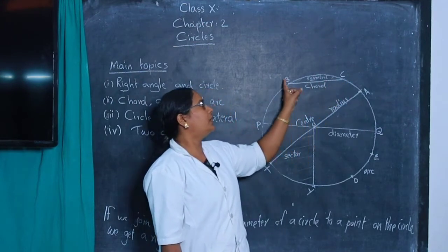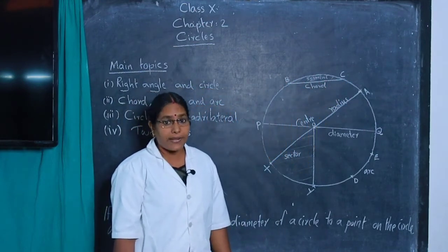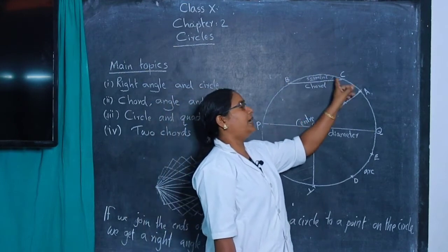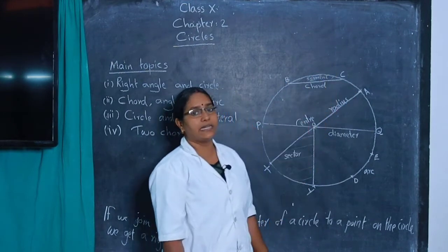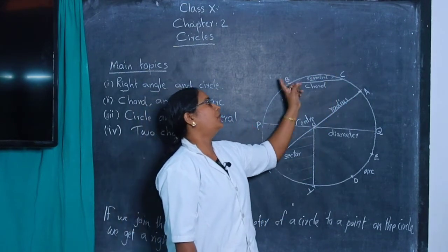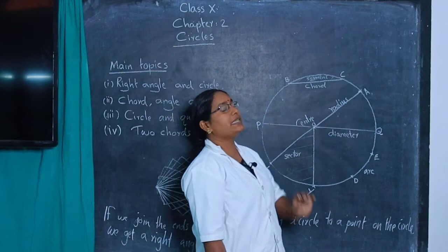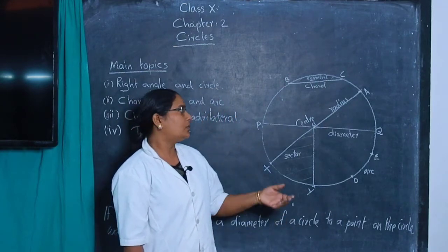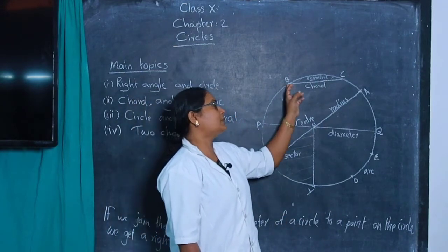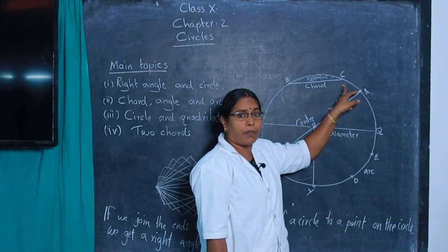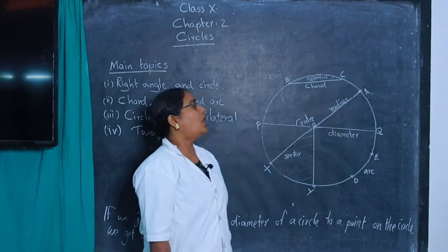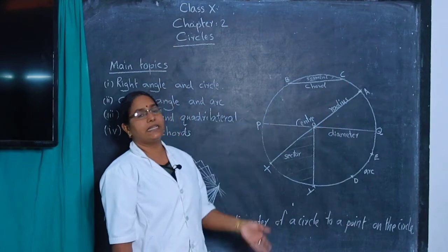I take two points B and C on the circle and join B and C. The line segment BC is called a chord. A line segment joining any two points on the circle is called a chord. One circle has an infinite number of chords.